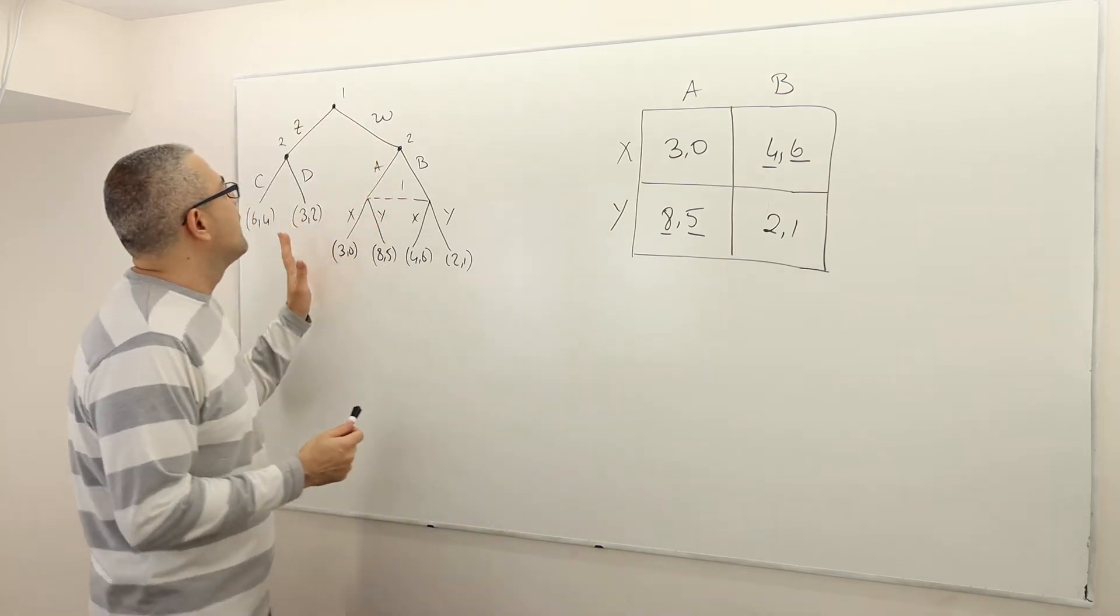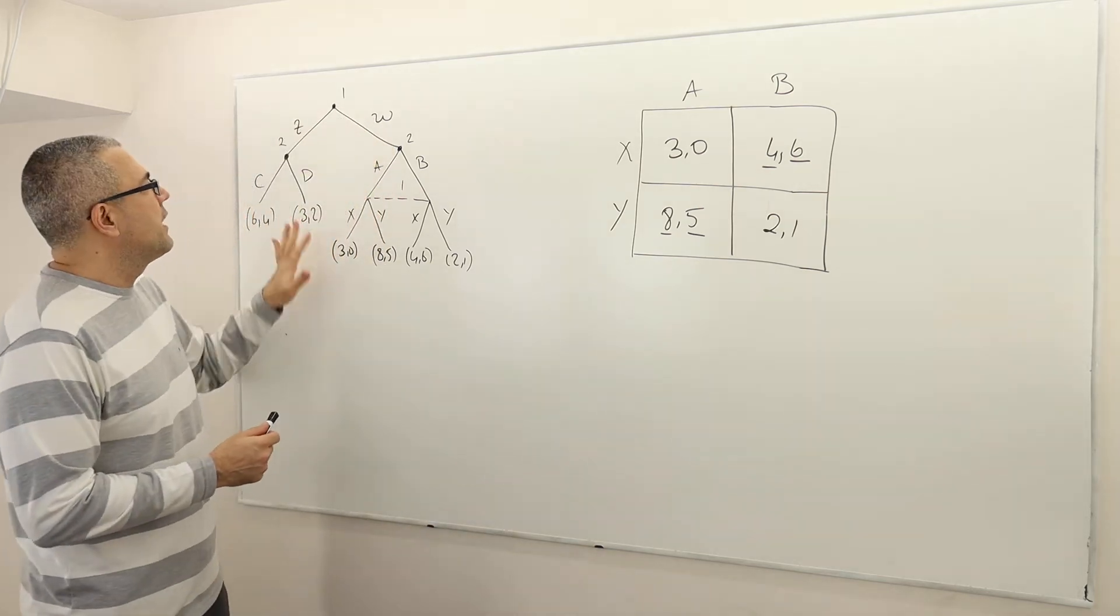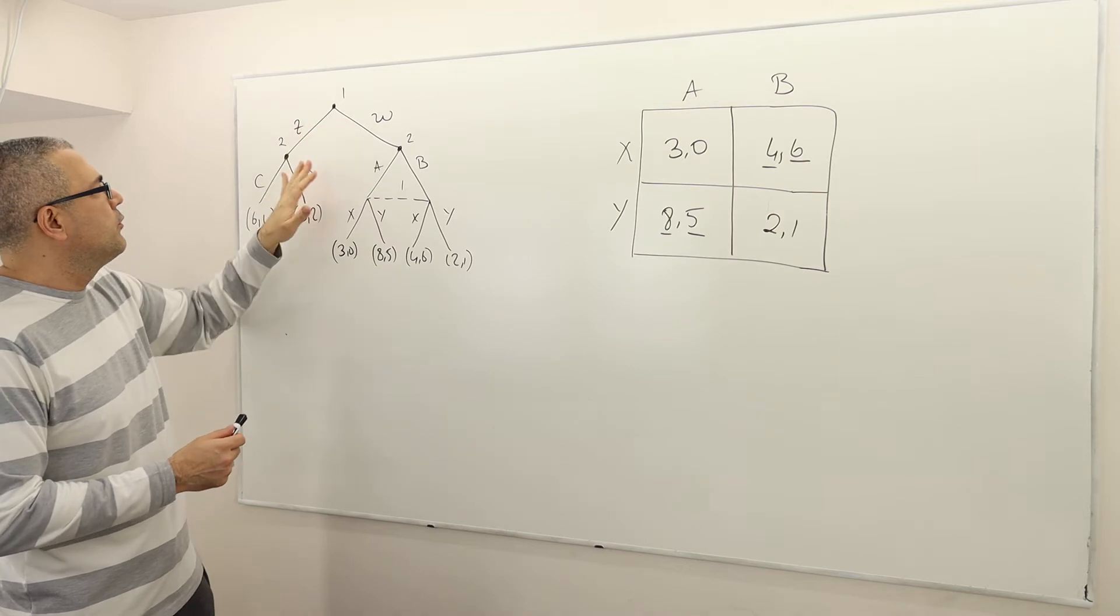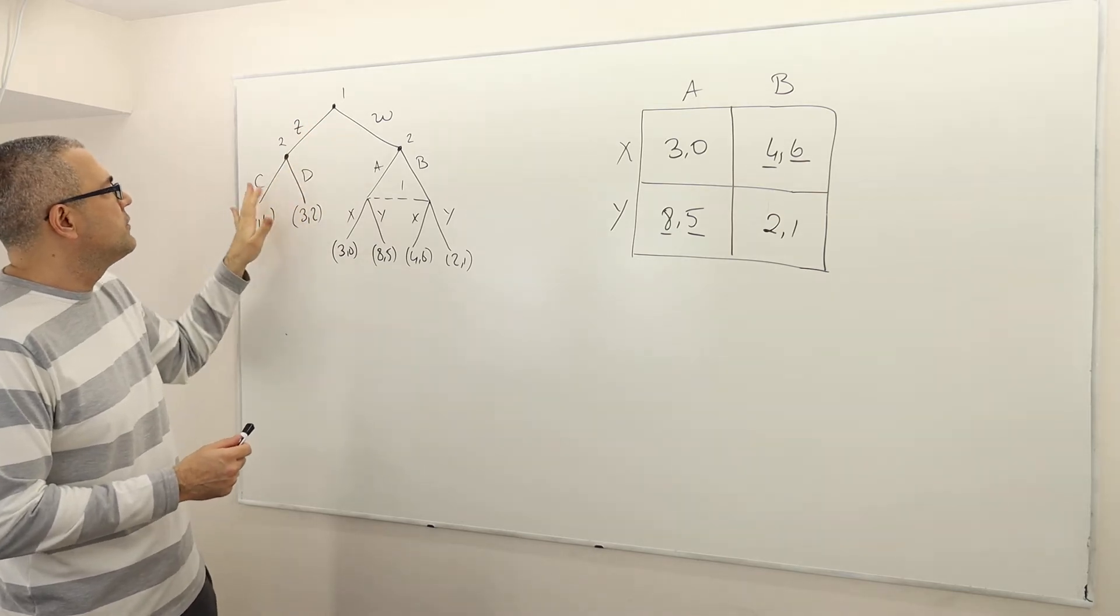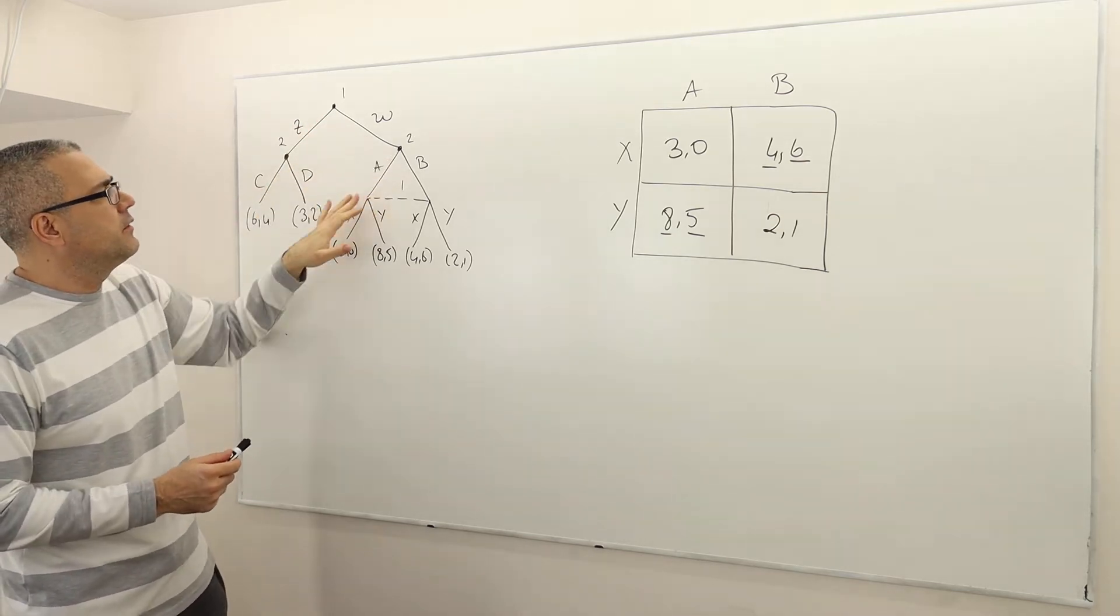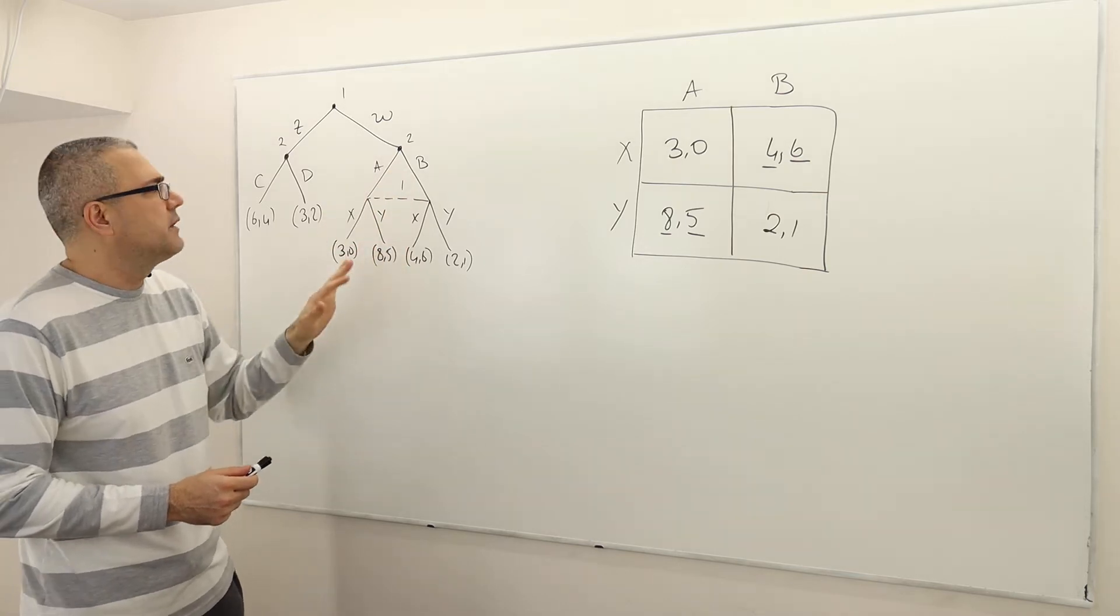Hi guys, so let's try to find the subgame perfect Nash equilibrium of this game. Player 1 moves Z or W, player 2 moves C or D, and then player 2 and player 1 here move simultaneously.